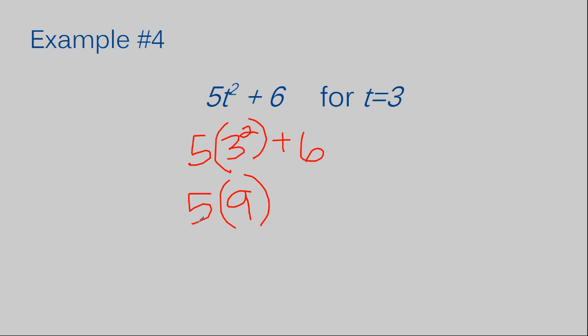So this becomes five times nine plus six. Five times nine is 45. And as you can see, each step of the way, I rewrote my problem again, only solving the portion that I was on. Five times nine. So this first time, all I did was plug in the three for the T. The next time, all I did was solve my three to the second power and get my nine. The next time I solved and got 45, so I just rewrote that part and everything else remains the same, except for the part that you just solved.